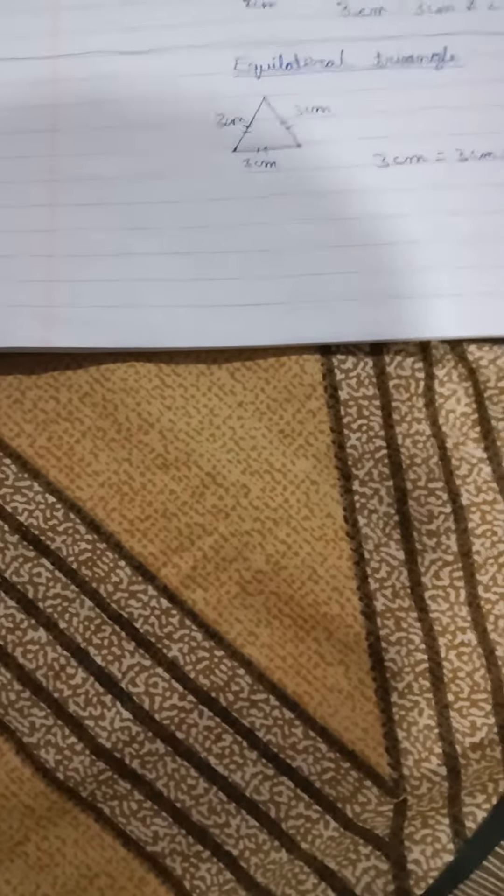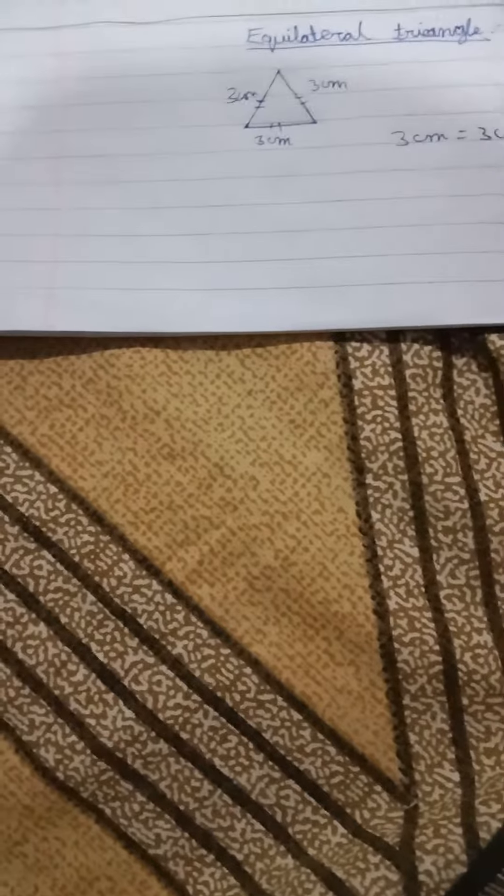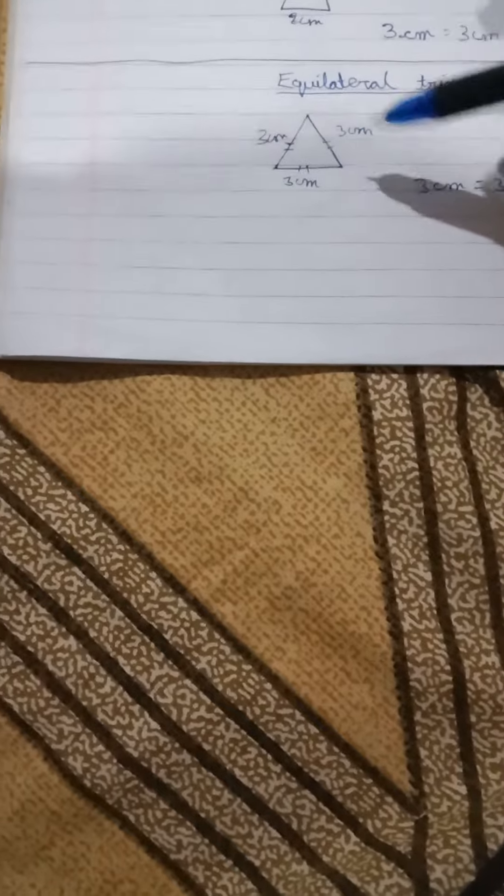Now we'll see an example to understand better. This side of the triangle is 3 centimeters, this side is also 3 centimeters, and this side is also 3 centimeters.